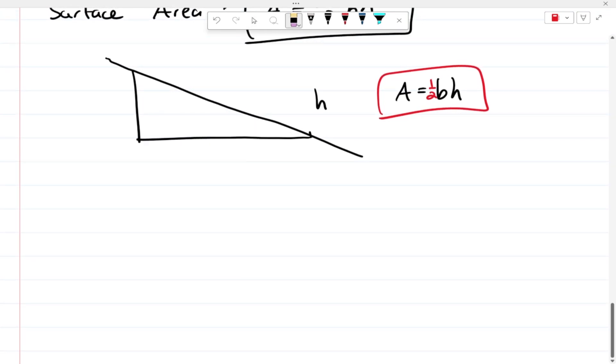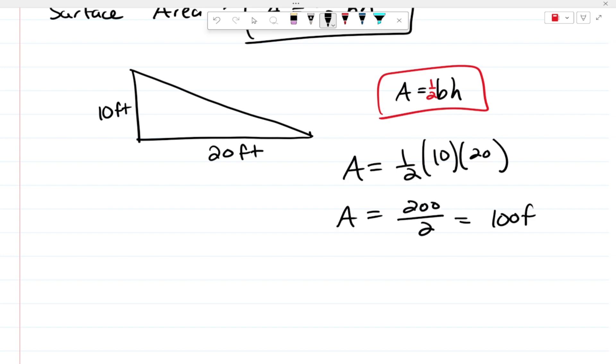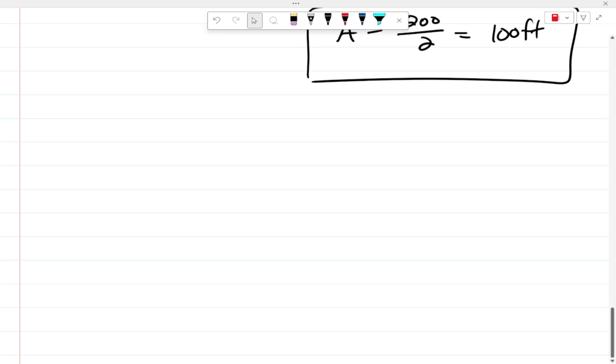Now let's say, for example, we knew the height was 10 feet, the length was 20 feet, and we wanted the surface area. This would just be area equals one-half times 10 times 20, or area equals 200 divided by 2, which is 100 square feet. So that's what the area of that right triangle would be.